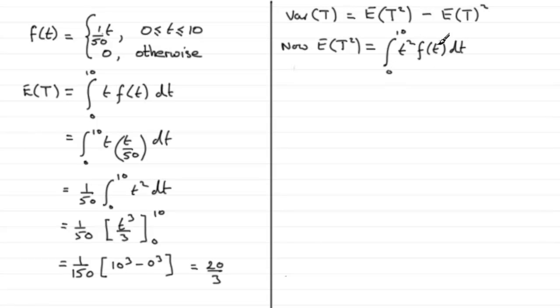f(t) we know is 1/50 times t. I'm going to put the 1/50 out the front of the integral, so we've got 1/50 there, integral of t squared times another t. T over 50 so it's going to be t cubed in here, dt, going from 0 to 10.